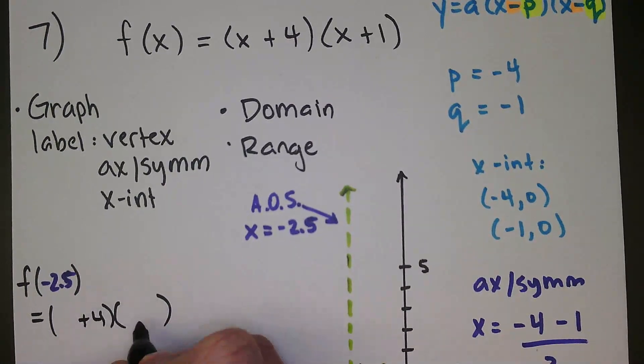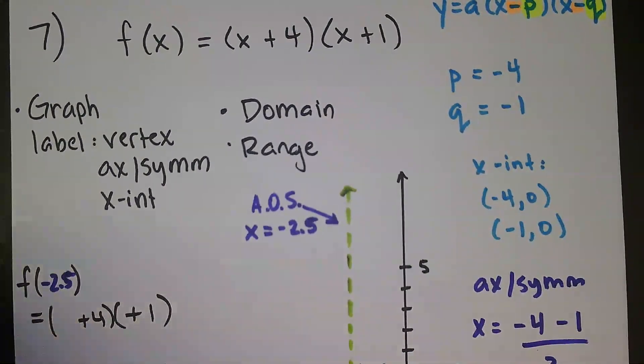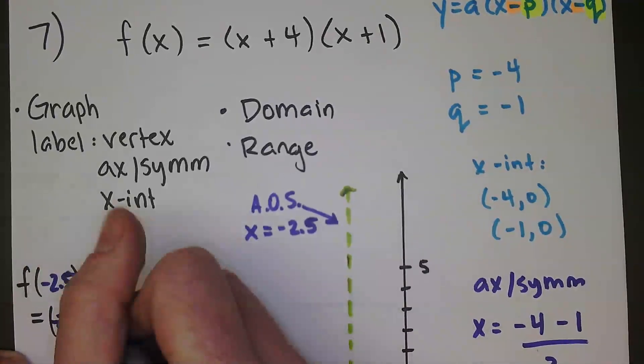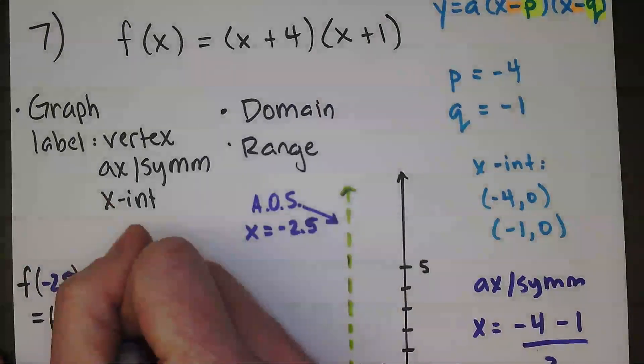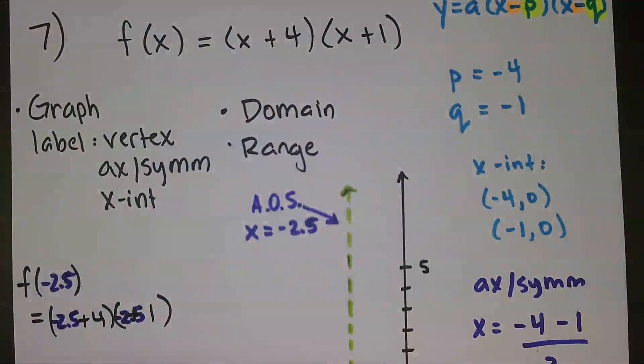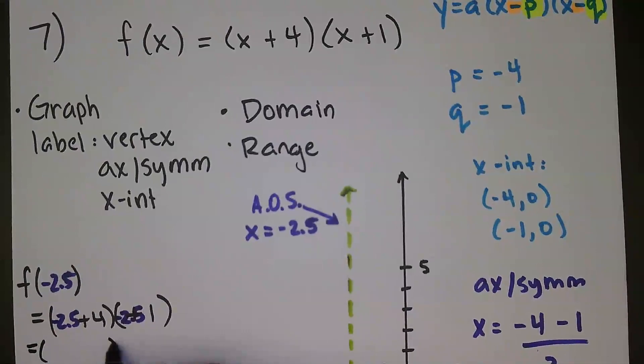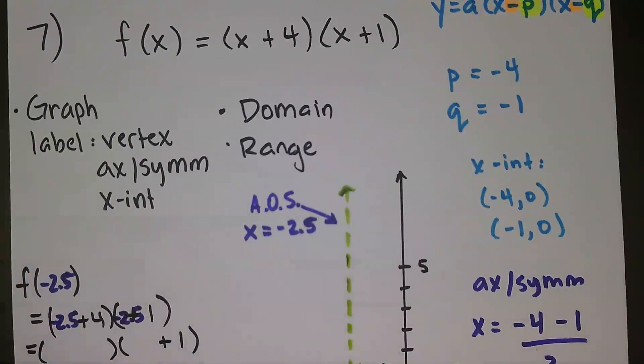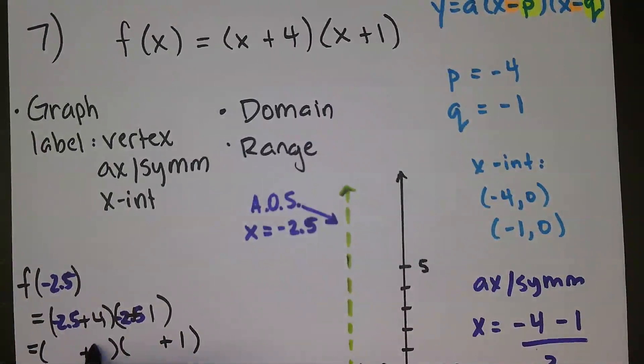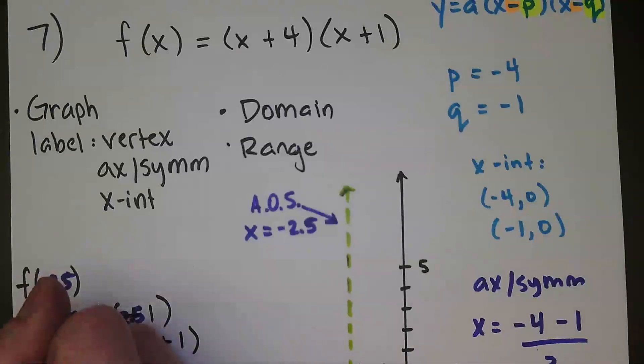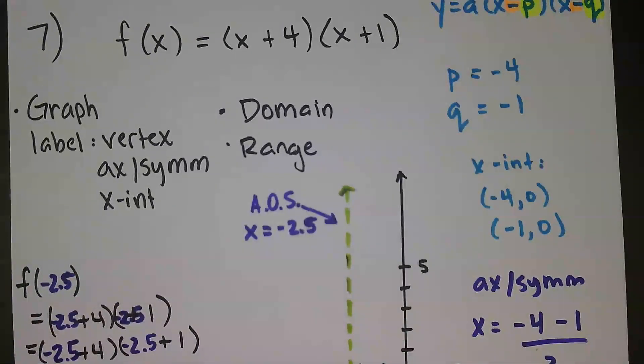So we're going to do plus 4, plus 1. And then I'm replacing the x with negative 2.5. I did not set that up well for spacing. I'm going to write it better underneath it. Plus 1, plus 4. Negative 2.5, negative 2.5. And then from here, I'll just use the calculator.